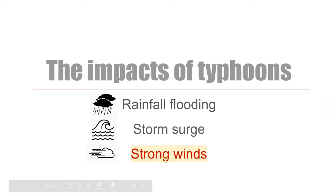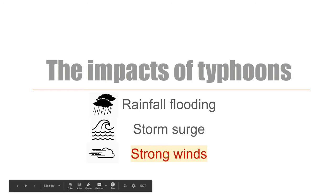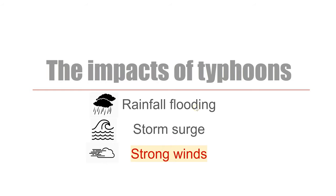That brings us to the last of the impacts — strong winds. Rainfall flooding: between three and four hundred millimeters, about half the annual rainfall we get in Lurgan falling in two to three days. Storm surge: can be two, three, four, five meters high, bringing devastation from the coastline because the whole level of the ocean rises up. And then finally, the strong winds.